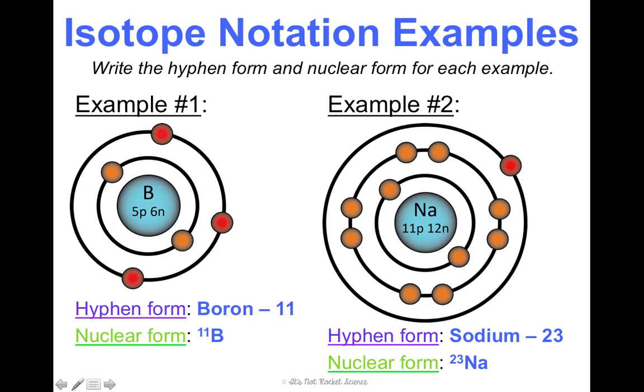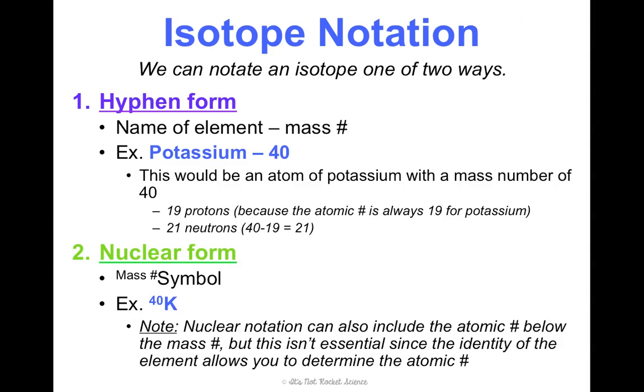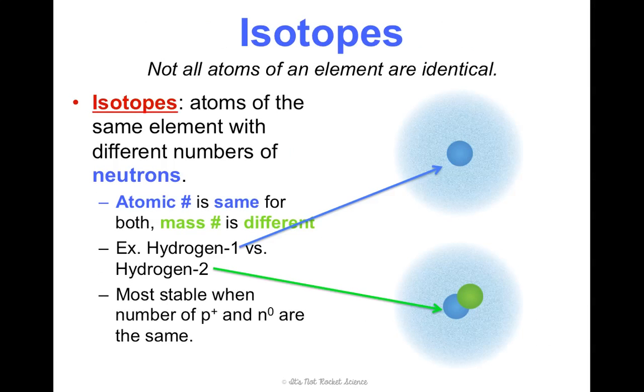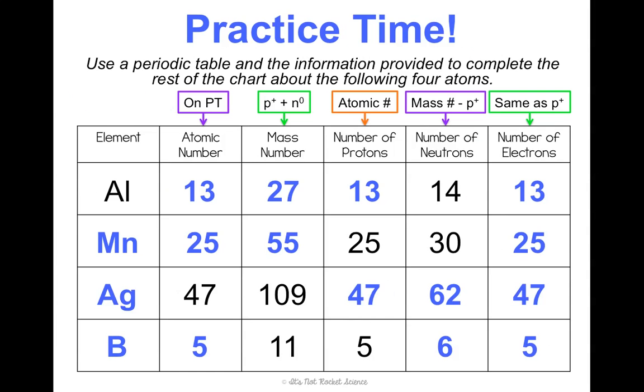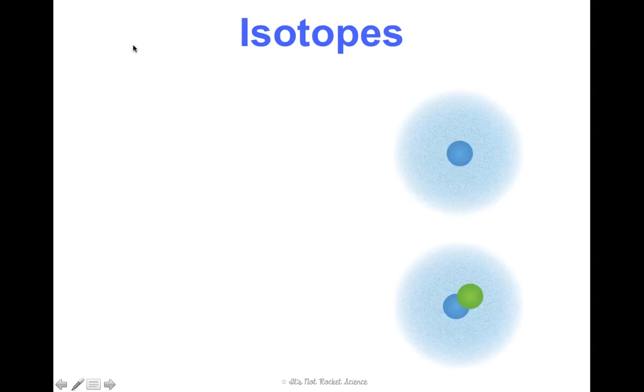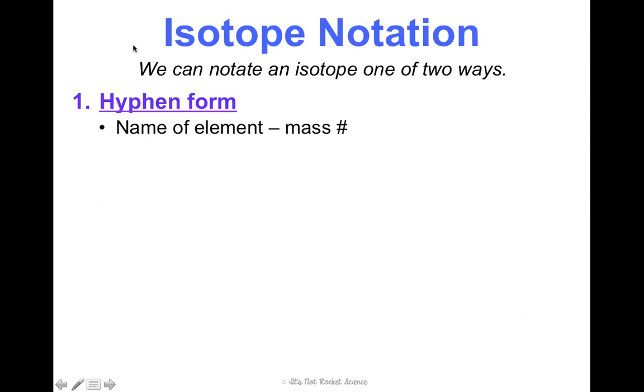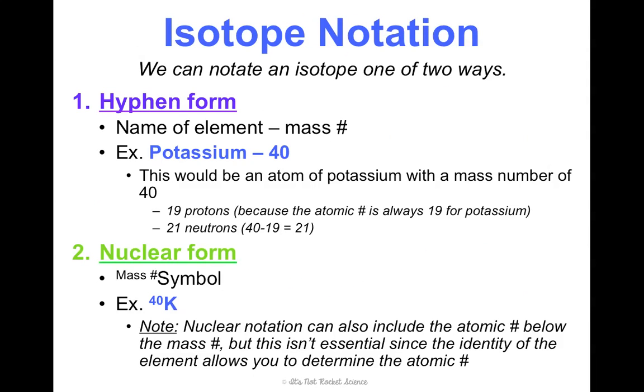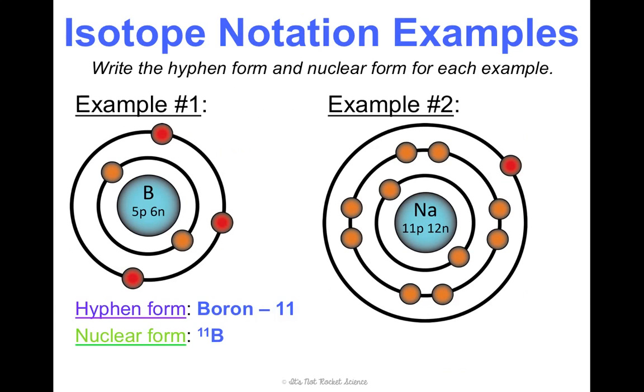I will have y'all do charts like from this page with isotopes. And, you'll have to write hyphen and nuclear notation. So, we are going to practice that. But, it's the same idea except for I'll have to give you some help with the mass number or number of neutrons. Because, you wouldn't be able to necessarily look that up on the periodic table.